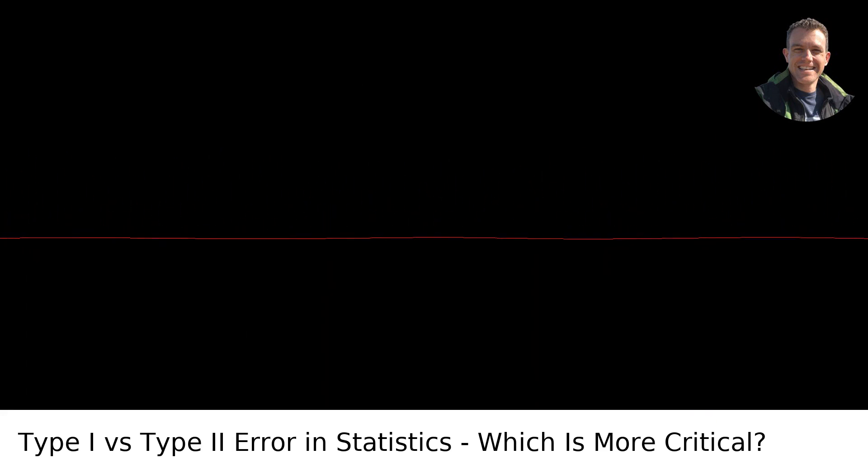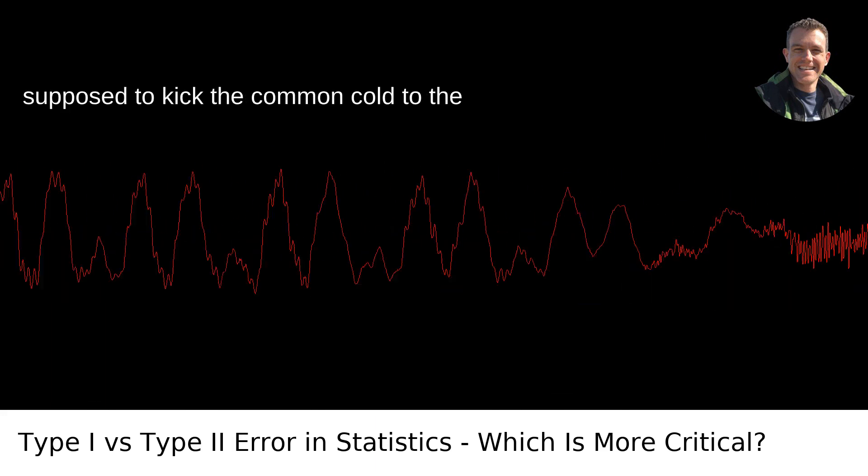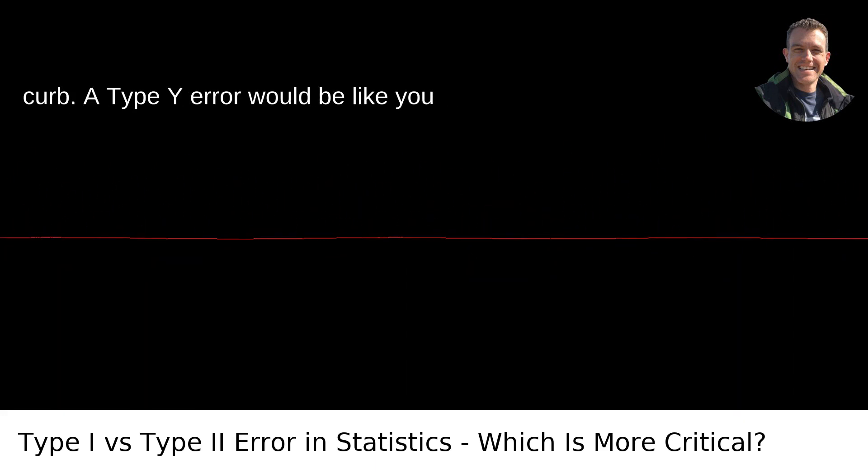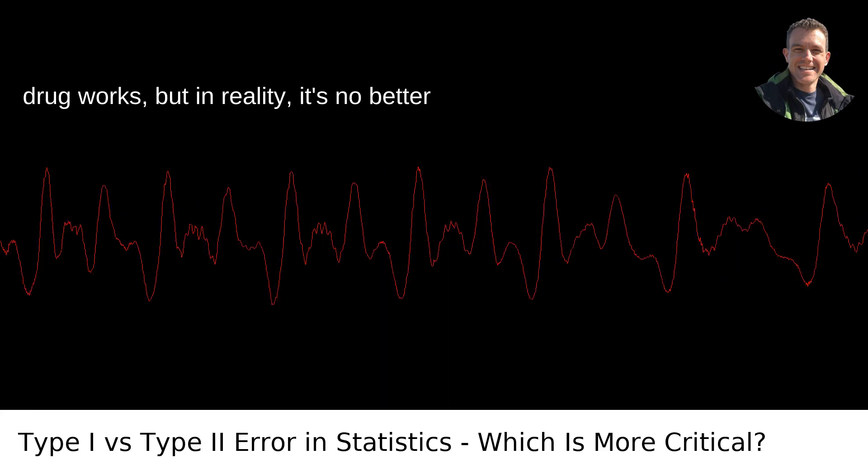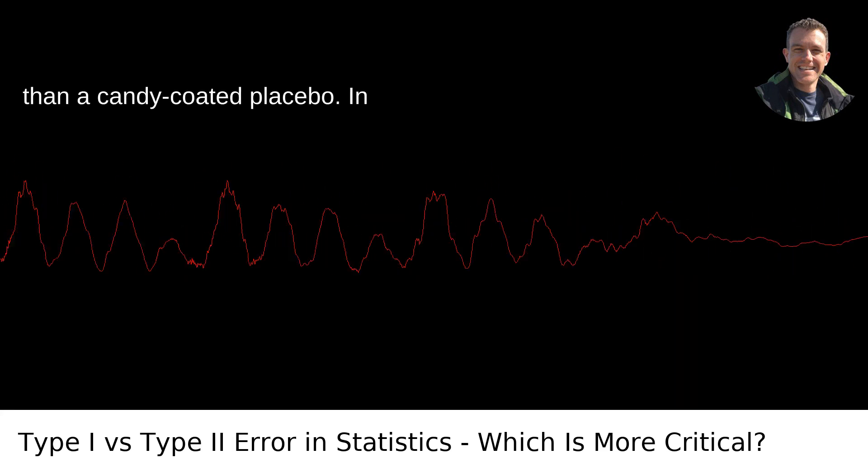Type 1 error: the false alarm. Imagine you're testing a new drug that's supposed to kick the common cold to the curb. A Type 1 error would be like you throwing a party because you think the drug works, but in reality, it's no better than a candy-coated placebo.